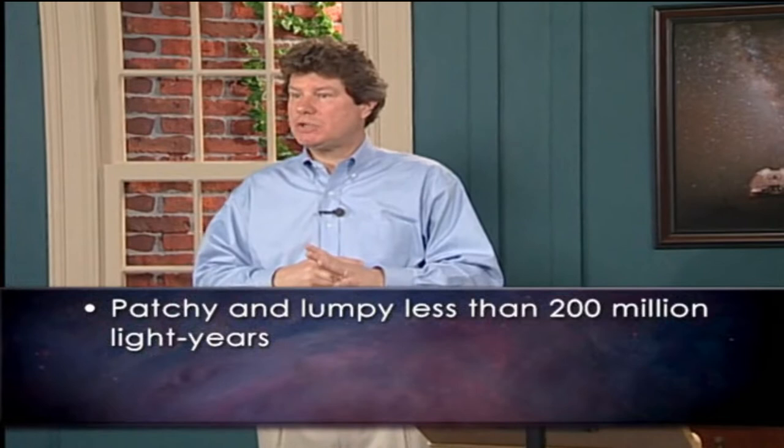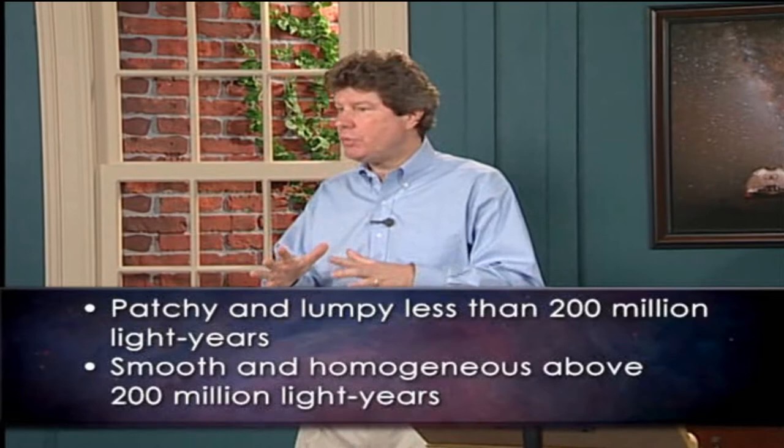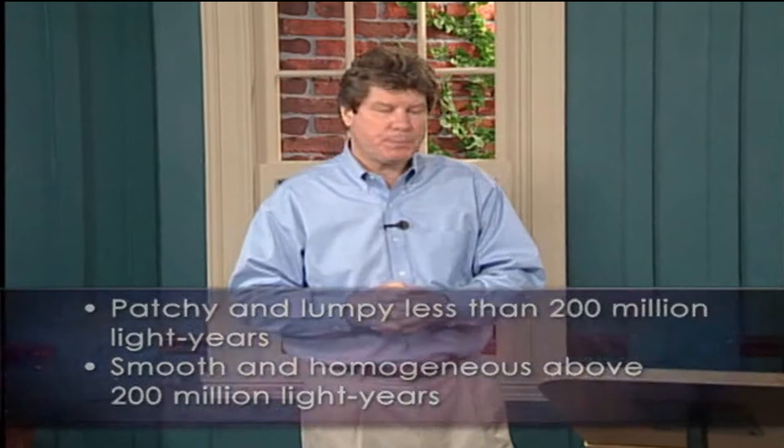Let me return to the example of water as a homogeneous substance. If you look at water on scales below a few nanometers, it becomes lumpy — there are molecules here and there, it becomes inhomogeneous. The universe also has this dual quality. It's patchy and lumpy on scales less than 200 million light-years, and smooth and homogeneous on scales above 200 million light-years. In water, the transition scale is about a nanometer; for the universe, it's about 200 million light-years. This is a fascinating property of the universe, and it's going to be a very important part of our cosmological story to explain that transition and why it occurs at 200 million light-years.